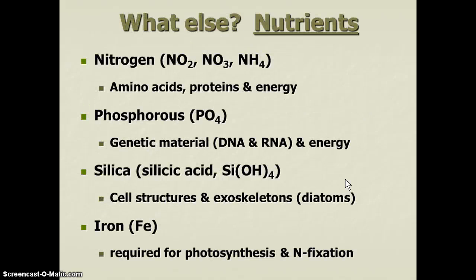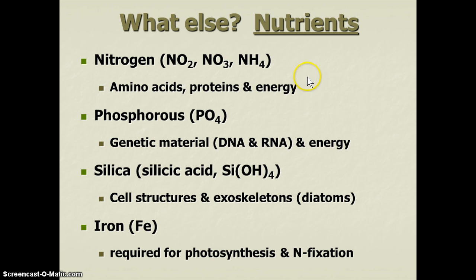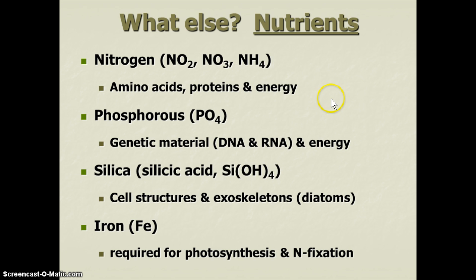So what do they need? We talked about their ability to take up nutrients — what else is needed? Nutrients are obviously necessary. Nitrogen in its bioavailable forms is important: it has to be nitrite, nitrate, or ammonia. Some organisms can take up one, two, or three of these better than others, making them better competitors. They need to build macromolecules for cellular growth and energy — amino acids, proteins, and energy molecules.